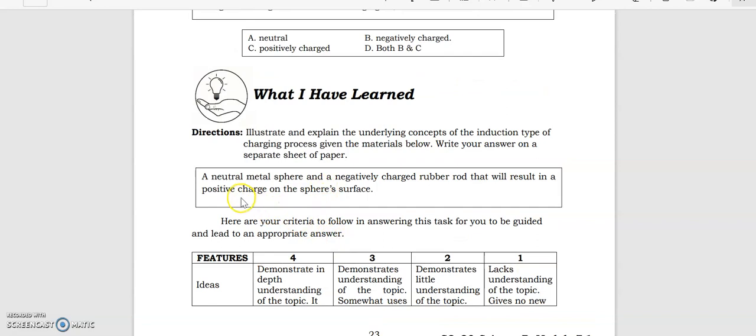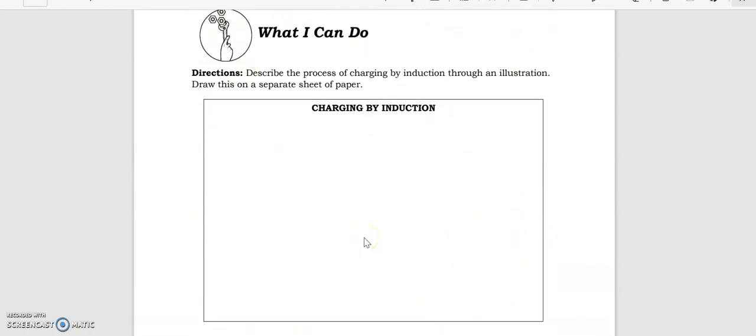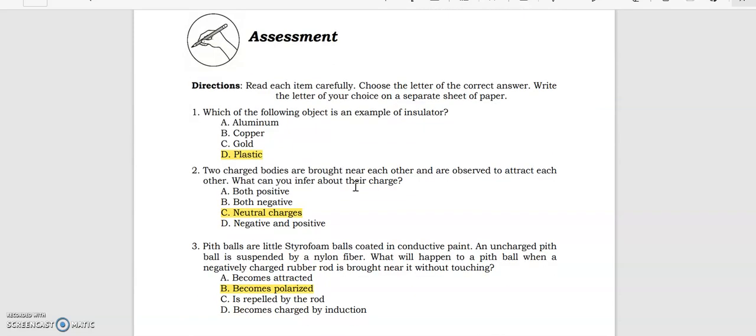What I have learned - you will do this on your own. A neutral metal sphere and a negatively charged rubber rod that will result in a positive charging of the sphere. There are rubrics for scoring. What I can do - describe the process of charging by induction through an illustration. Draw this on a separate sheet of paper. You can do the one illustrated during the discussion, either with a positively charged balloon or negatively charged balloon, with two cans or two spheres. You may illustrate it yourself. We have rubrics of scoring for the assessment.